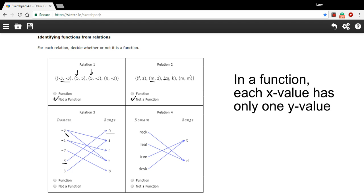If you look at this one, negative 3 goes to s and it goes to t. So it's got two different y values for the negative 3 x value, and the same is true for negative 1. So this is definitely not a function.